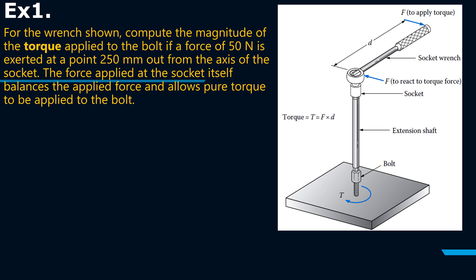At this point maybe you can refer to, if you have not, the torsion videos I believe one, two, and three in my series dealing with structures. So for example, if we have a figure as shown, for the wrench shown compute the magnitude of torque applied to the bolt if a force of 50 Newton is exerted at a point 250 millimeters out from the axis of the socket.